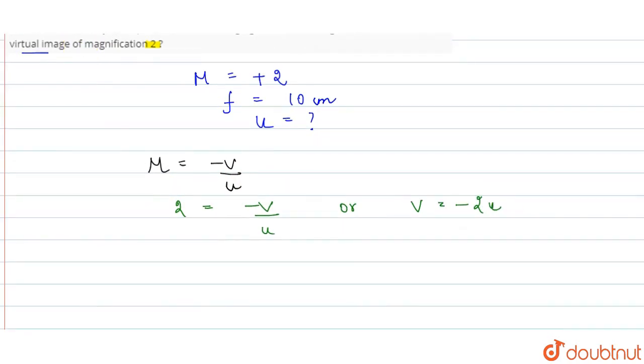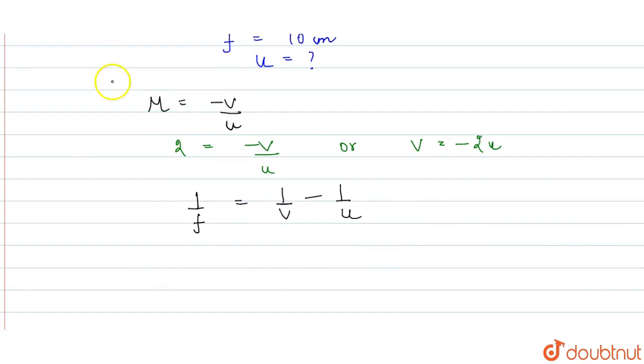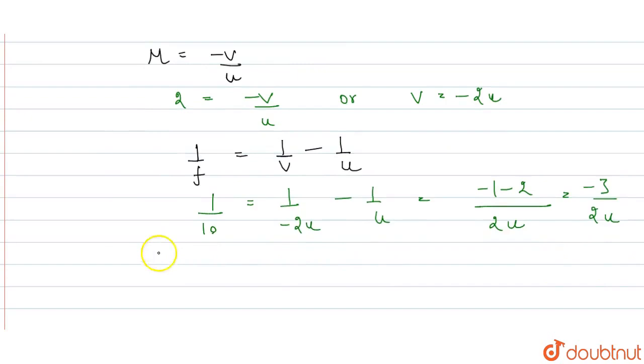Now the lens formula: we can use this formula. 1 upon f is equal to 1 upon v minus 1 upon u. So 1 upon 10 is equal to 1 upon minus 2u minus 1 upon u. This equals minus 1 minus 2, which is minus 3 upon 2u. If we cross multiply, 1 by 10 equals minus 3 upon 2u, so 2u equals minus 30.